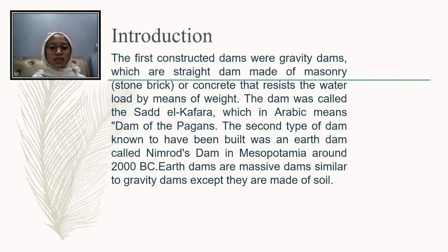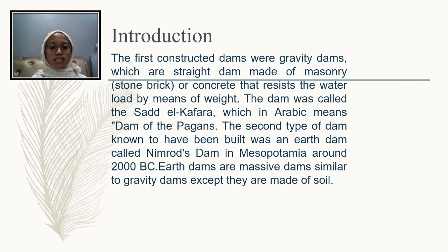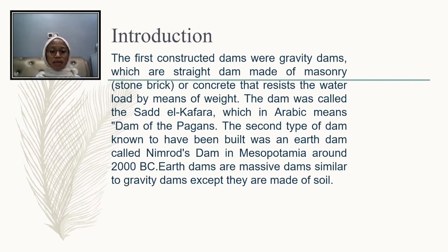The first constructed dams were gravity dams, which are straight dams made of masonry — that is, stone, brick, or concrete — that resist the water load by means of weight. The dam was called the Sa'id al-Kafara, which in Arabic means 'dam of the pagans.' The second type of dam known to have been built was an earth dam called Nimrod's dam in Mesopotamia, around 2000 BC.